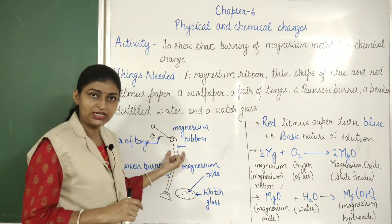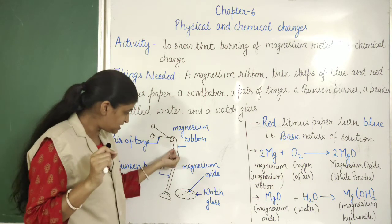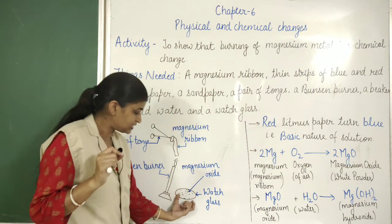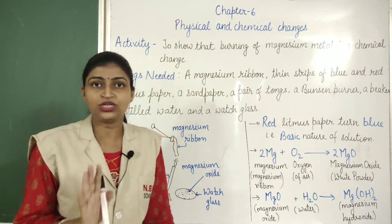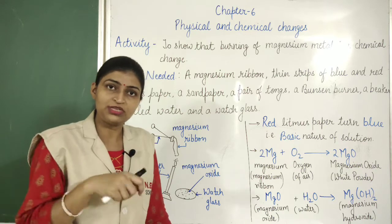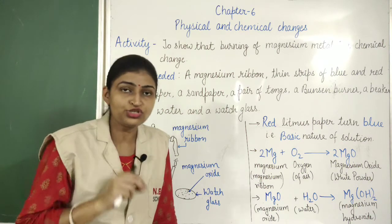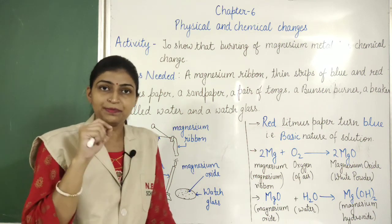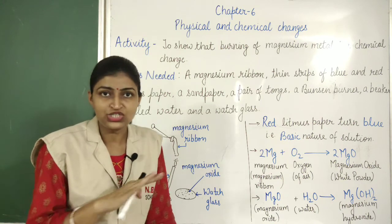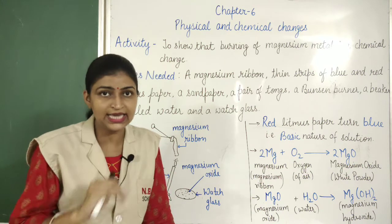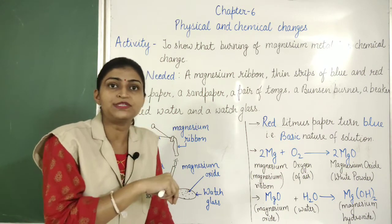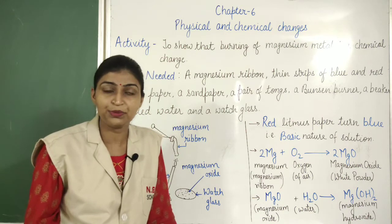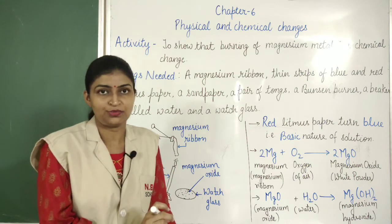When the magnesium ribbon was burnt, we observed a dazzling white light, and the white oxide powder was collected in the watch glass. This collected powder was dissolved in 20 ml of distilled water, which is neutral in nature. After that, we tested the solution to see if it is basic or acidic. We used red and blue litmus paper. Adding some drops to blue litmus paper showed no colour change — that means the solution is not acidic. When some drops were added to red litmus paper, it changed to blue. That means the solution is basic in nature.